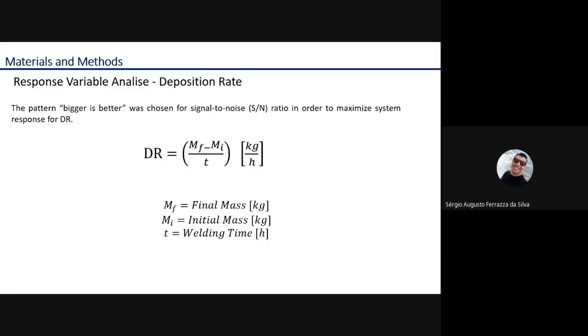The deposition rate is equal to final mass minus initial mass divided by welding time. The deposition rate is expressed in kilograms per hour. The pattern bigger is better was chosen for the signal-to-noise ratio, S/N, in order to maximize system response for the deposition rate.